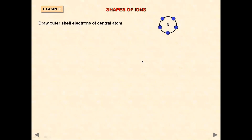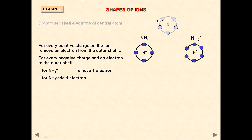Let's have a look at this example. Draw the outer shell electrons of the central atom first — in this case it's nitrogen. The two examples we are going to discuss are NH4 positive and NH2 negative. We know that if the charge is positive, you simply remove an electron from the outer shell. So for NH4⁺, there are five electrons in the outer shell; remove one, and you're left with four electrons, giving a positive charge on the ion. If the charge on the ion is negative, you simply add an extra electron.